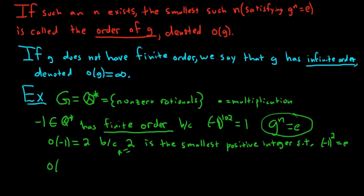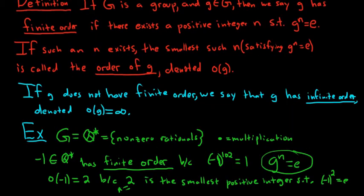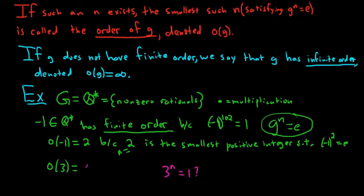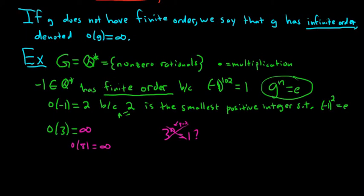What about the order of three? We would need a positive integer n such that three to the n equals one. Using zero would work, but order requires a positive integer. There is no positive integer for which this is true, so the order of three is equal to infinity. Likewise, the order of eight is equal to infinity.